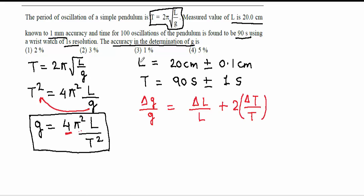Here we have to find percentage accuracy in the determination of g, so we will multiply the whole equation by 100. This would also go to 100, and then 100.